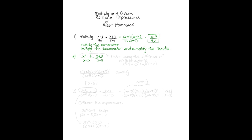Example number two. We have a little different scenario here: x squared minus four over x plus three, times x plus three over x plus two. This portion — x squared minus four — we're going to need to factor using the difference of perfect squares. We can factor this as x plus two times the quantity x minus two.